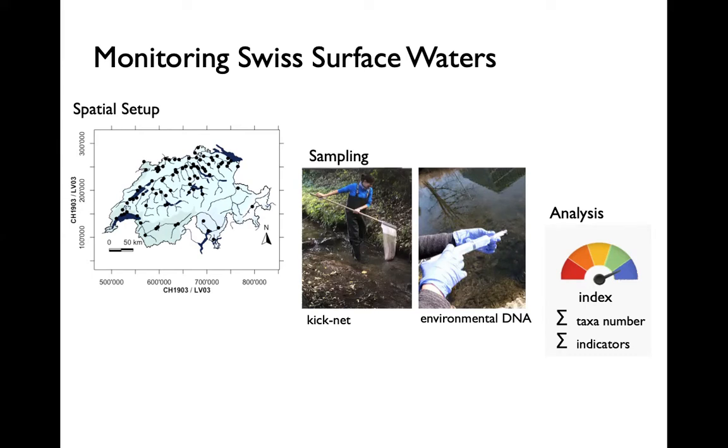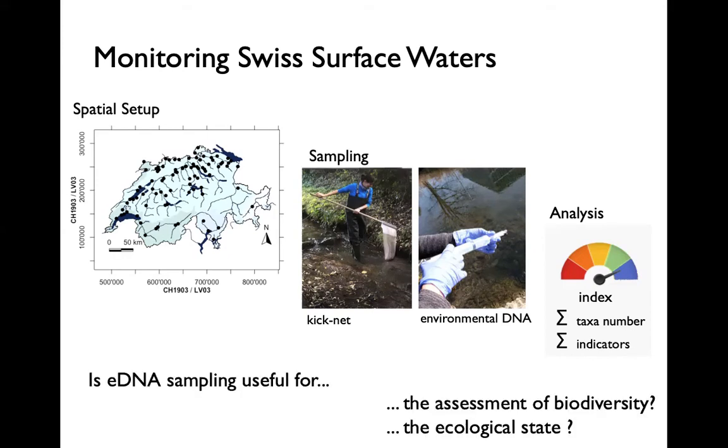In this index, the more taxa that are present at a site and the higher their indicator value, so the responsiveness to stressors, the higher would be the index score for this site. In this study, we evaluated the comparability of eDNA sampling to Kiknet in order to describe the diversity of macroinvertebrates and to assess the ecological integrity of rivers.